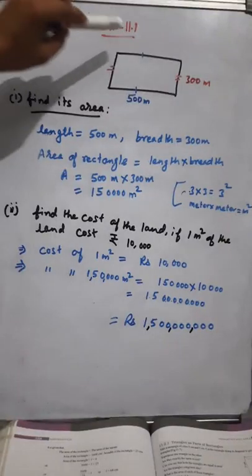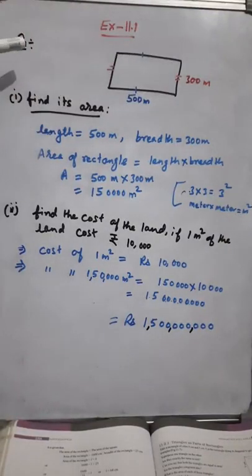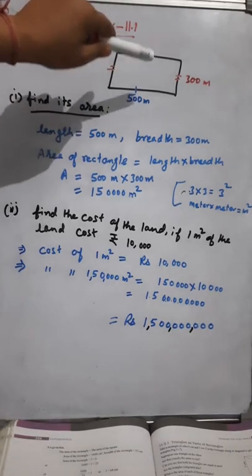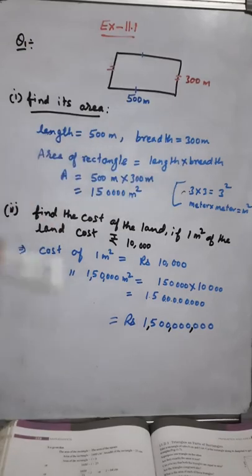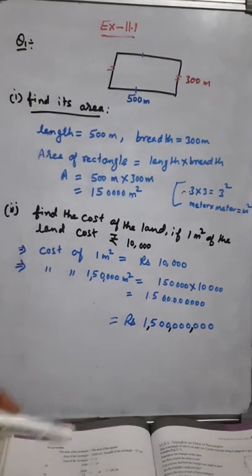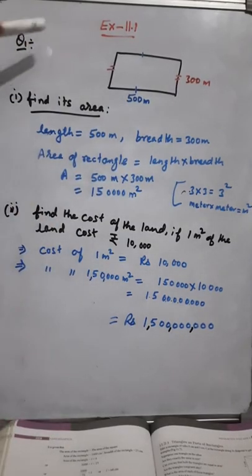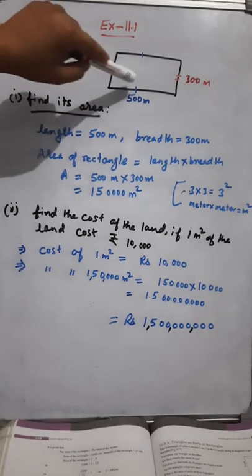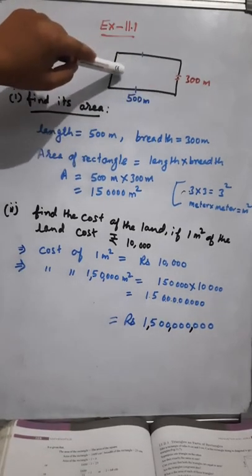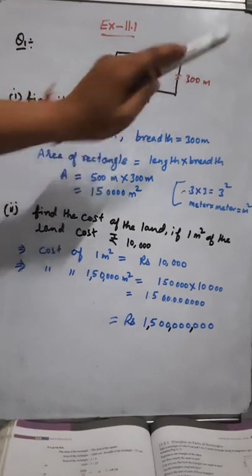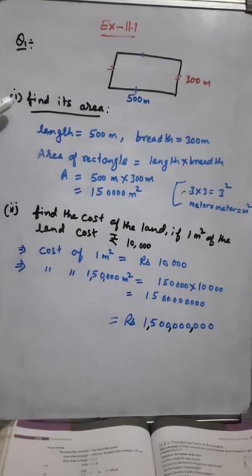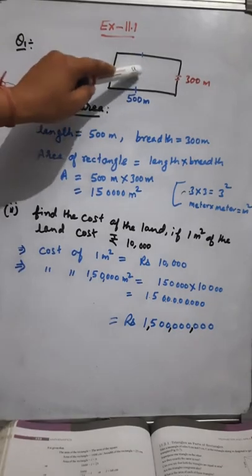Exercise 11.1, question number one: given the length and breadth of a rectangular piece of land is 500 meters and 300 meters. Here a rectangle shape ka land hai and its length is given 500 meters and breadth is given 300 meters. First, we have to find its area.